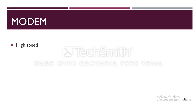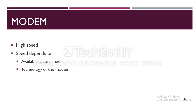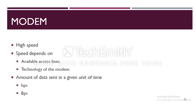All these processes are performed by the modem at extremely high speeds. The speed of the modem depends upon the number of available access lines and the technology of the modem. The amount of data that can be sent in a given unit of time is usually expressed in bits per second or bytes per second.